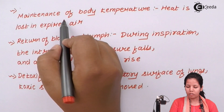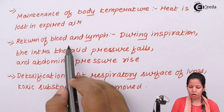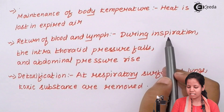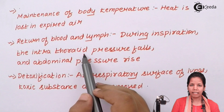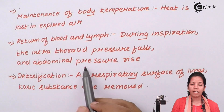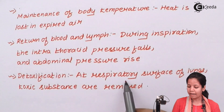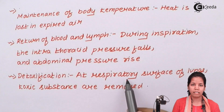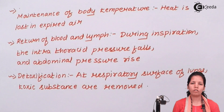Maintenance of body temperature is achieved as heat is lost during the expiration process. Also, the return of blood and lymph to circulation is facilitated during inspiration, as thoracic pressure falls rapidly while abdominal pressure rises, leading to blood flowing at a greater speed and improved lymphatic flow. Lastly, detoxification: during the respiratory passage of inhalation and exhalation, carbon dioxide is expelled rapidly and oxygen is distributed at a faster rate throughout the body.